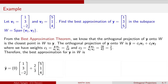Now we have both weights for our best approximation: c1 = 0 times v1, plus c2 = two-thirds times v2. Simplifying, this gives us the best approximation y-hat = (10/3, 2/3, 8/3).